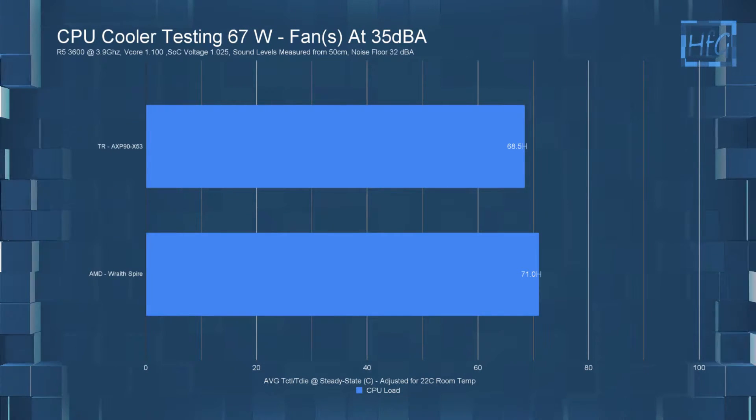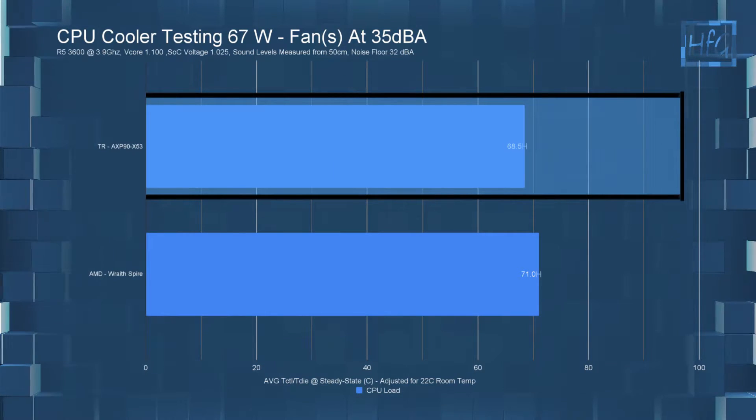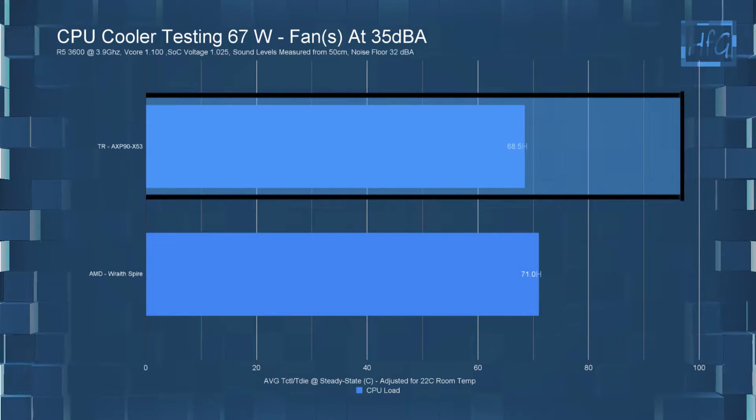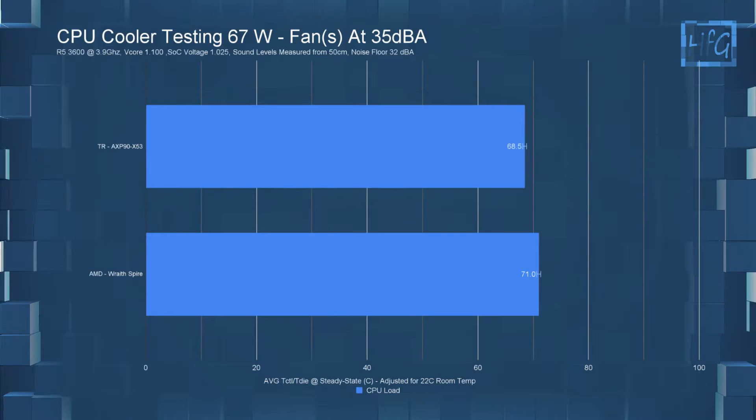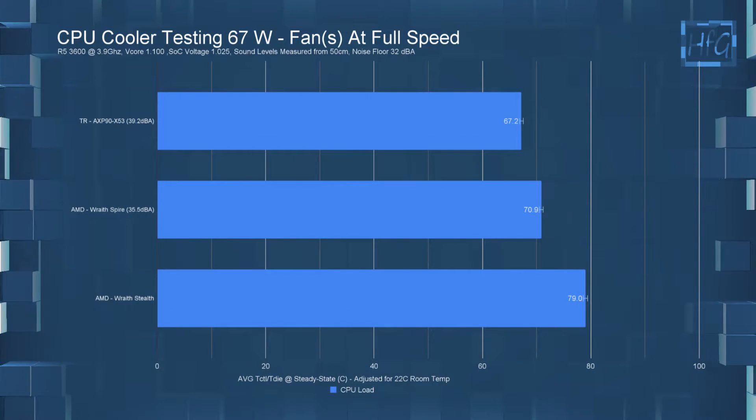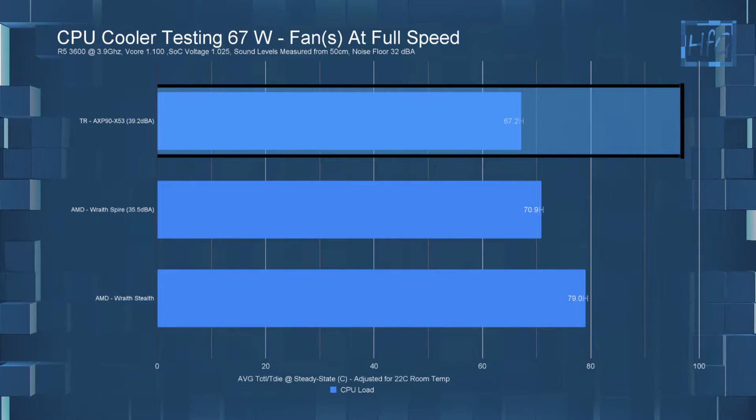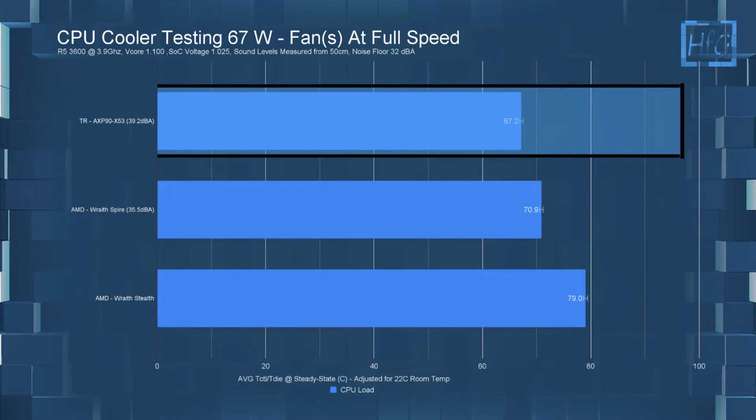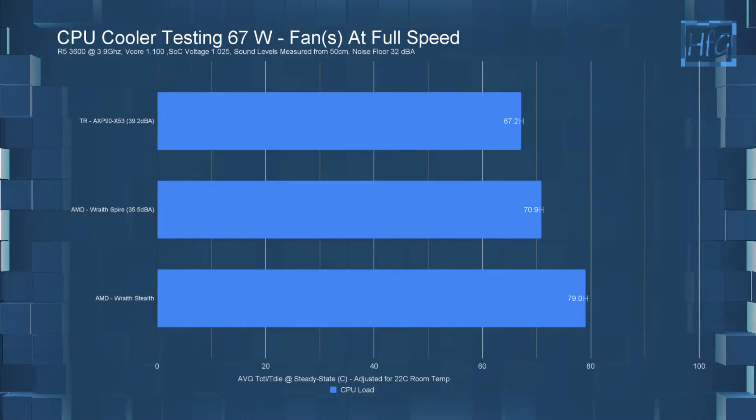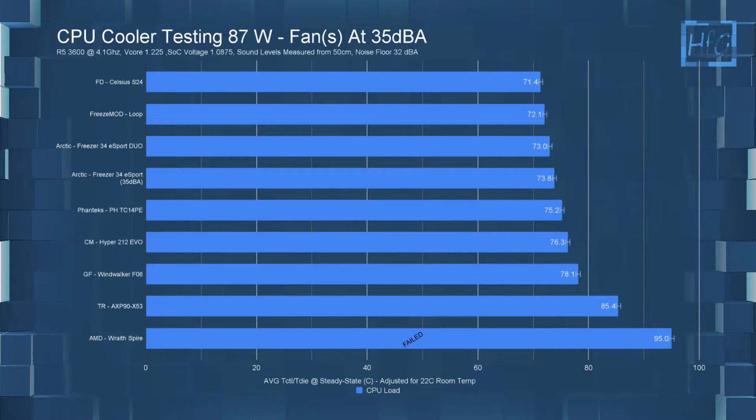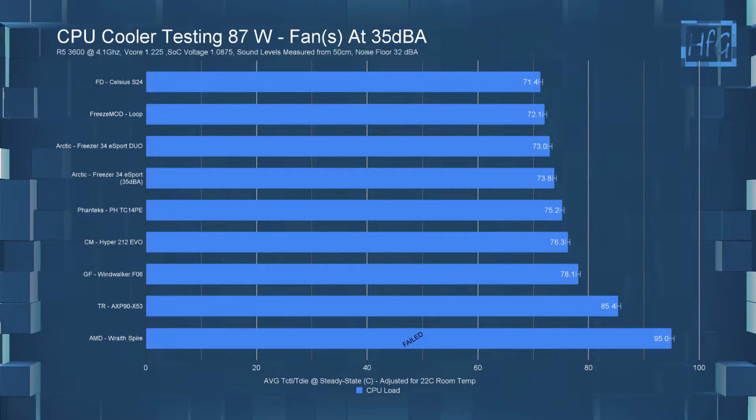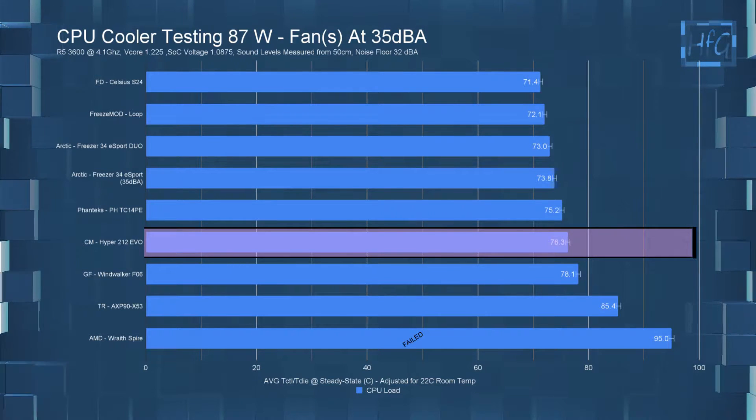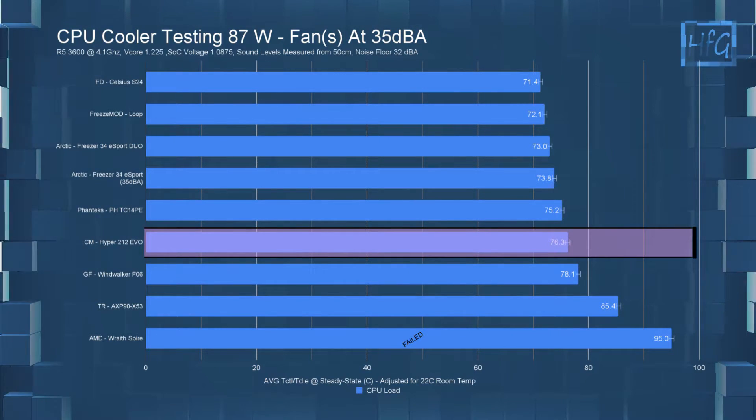So the X53 in the 35 DBA noise equalized 67 watt test had a temperature of 68.5 Celsius, which has it 2.5 Celsius cooler than the Wraith Spire. When letting the fan run at full speed, the average CPU temperature was 67.2 Celsius, and the cooler had a DBA of 39.2. So there is a pretty large noise difference for not much of a temperature difference. In the 87 watt testing, it performed well for its size. And when looking at these charts, you do need to keep in mind this cooler is meant for an ITX case, meaning it is a much smaller cooler than something like the Hyper 212 EVO.